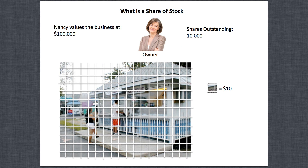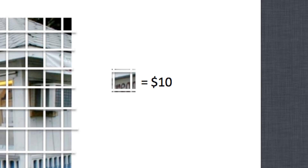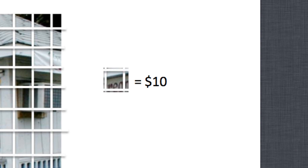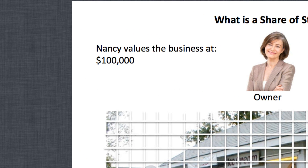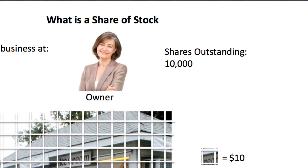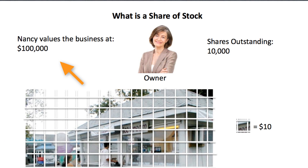So what is a share of stock? I took the picture of the ice cream stand — a whole business valued at a hundred thousand dollars — and she divided this company up into ten thousand pieces. Those little squares represent that split. One piece of that business equals ten dollars, because we simply took a hundred thousand divided by ten thousand — that's ten dollars per share.